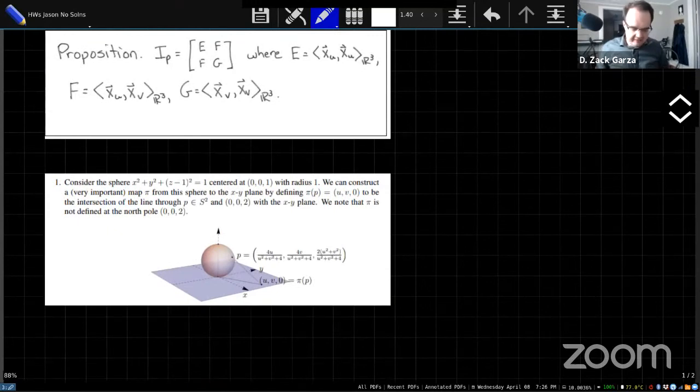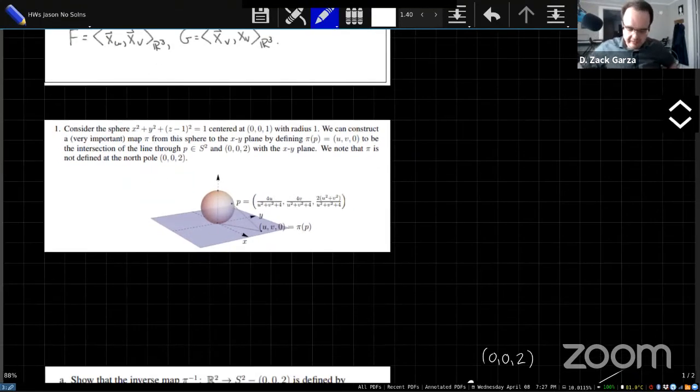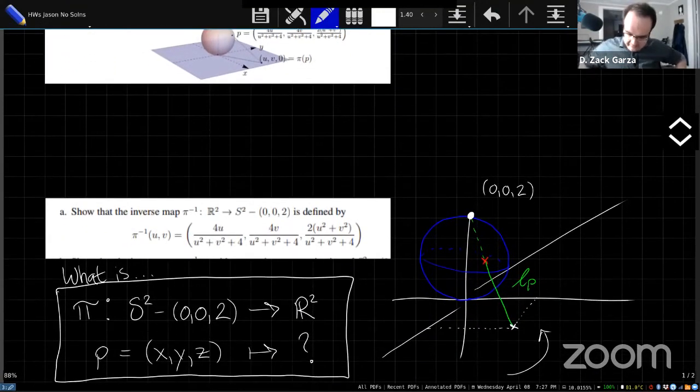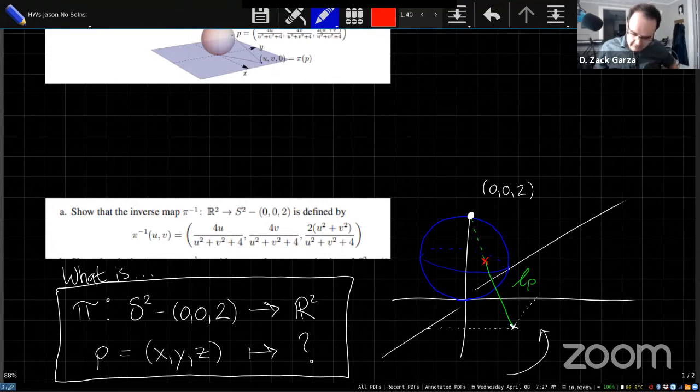So the first question asks us, well, the setup for it is that we have this sphere. It's sitting one unit above the xy plane. And we're defining this map, stereographic projection, which essentially takes a line. I'm drawing a picture here. For any point on the sphere, which I've denoted here with this red x, we take the point 002 sitting at the top of the sphere, we take a line through 002 and our point, and we look at where that intersects the xy plane, and that is our projection.